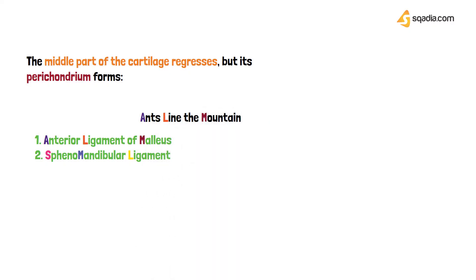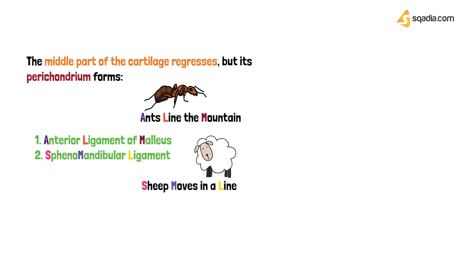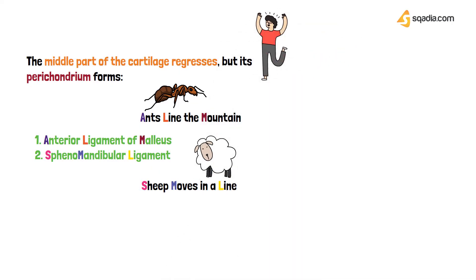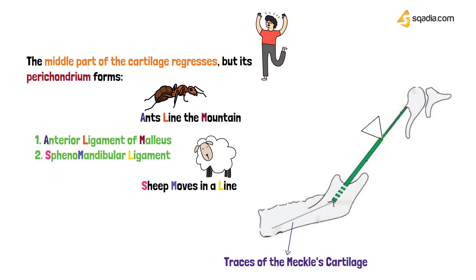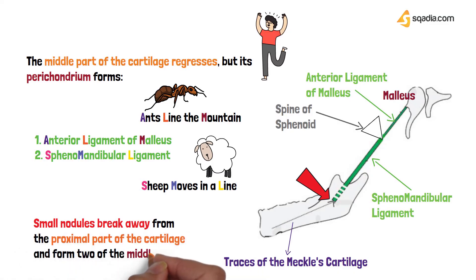The perichondrium forms some remnants. The anterior ligament of the malleus — remembered by the mnemonic 'ants line the mountain' — and the sphenomandibular ligament — remembered by 'sheep moves in a line'. The sphenomandibular ligament runs between the spine of the sphenoid bone and the lingula of the mandible. Some smaller nodules break away from the proximal end of the cartilage and form two middle ear bones: the incus and the malleus.